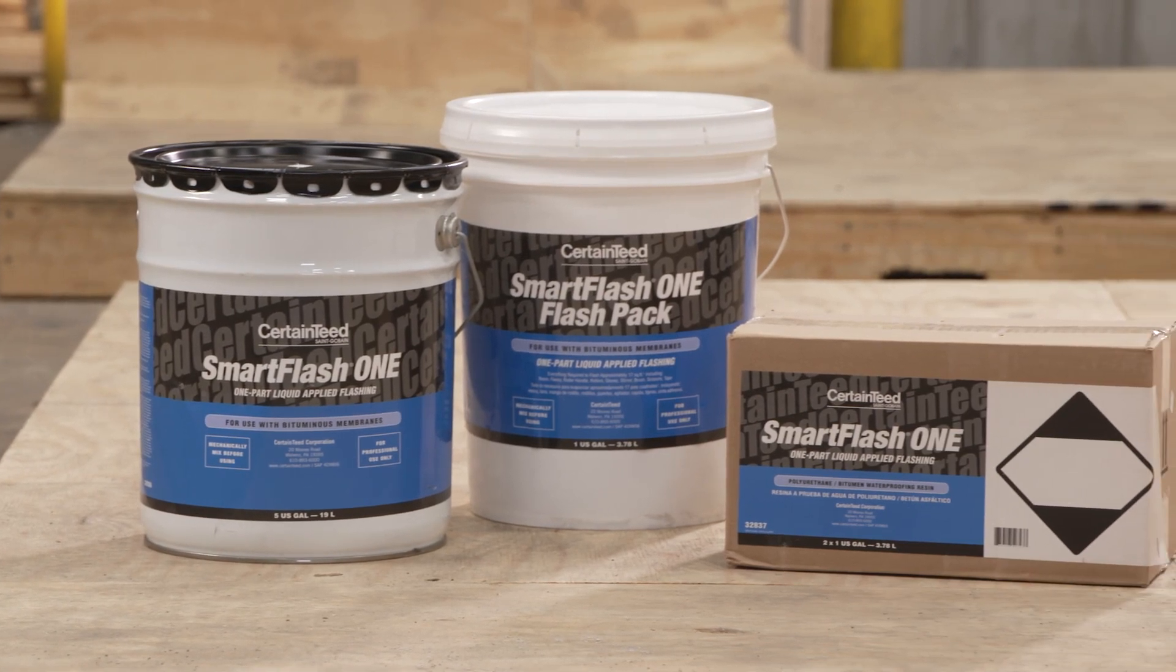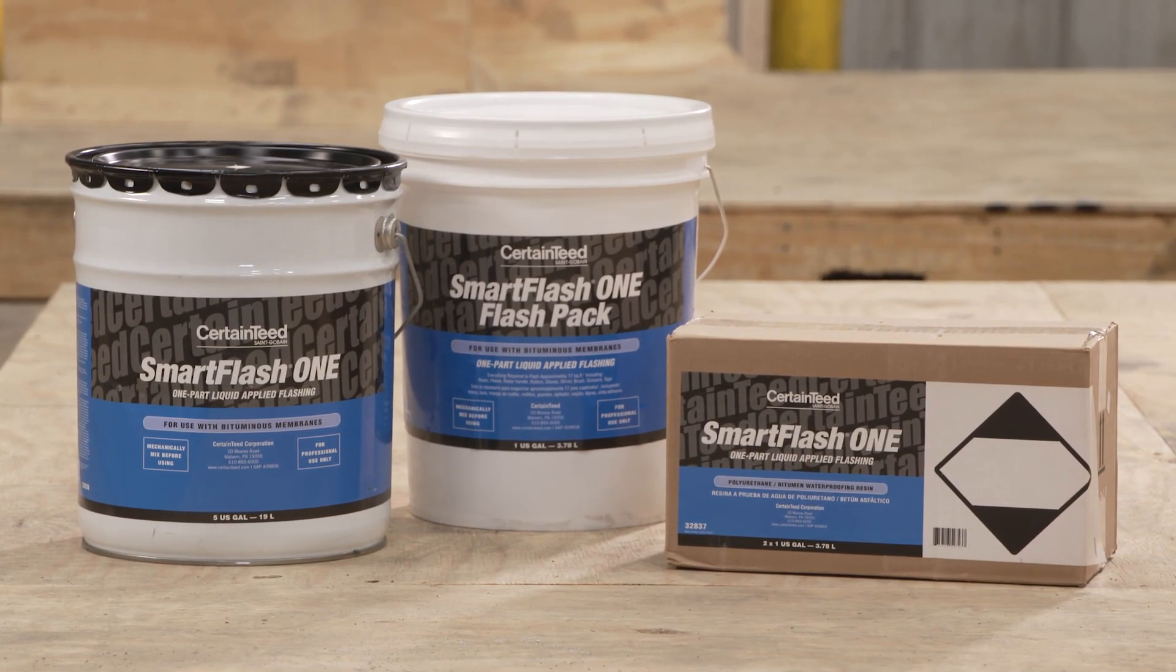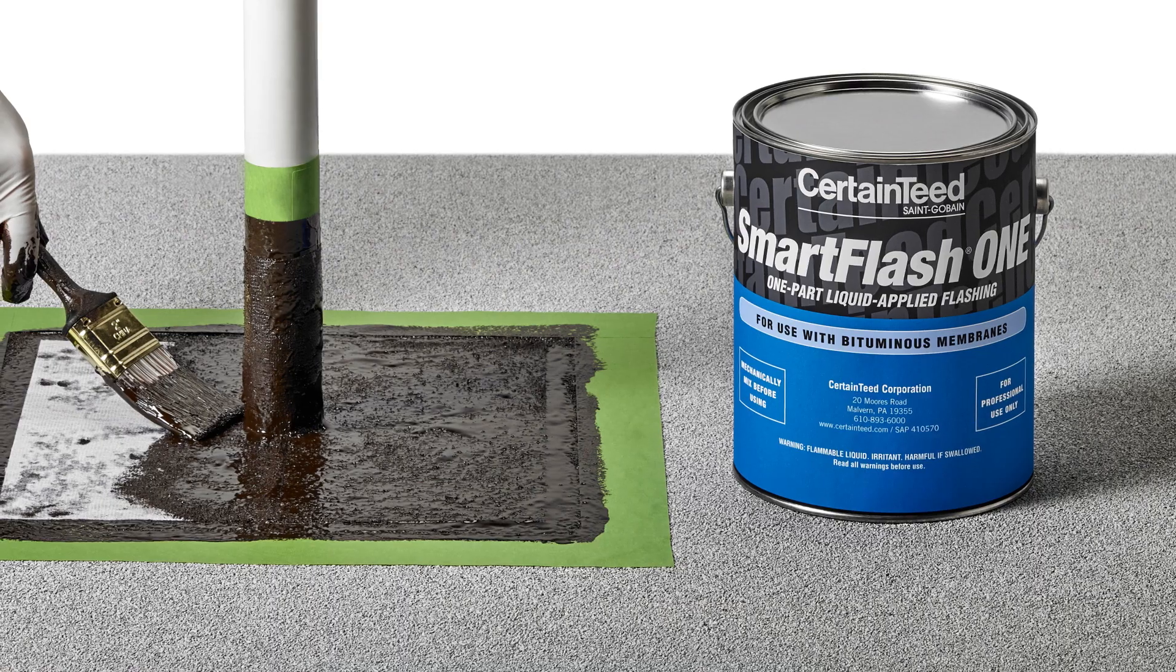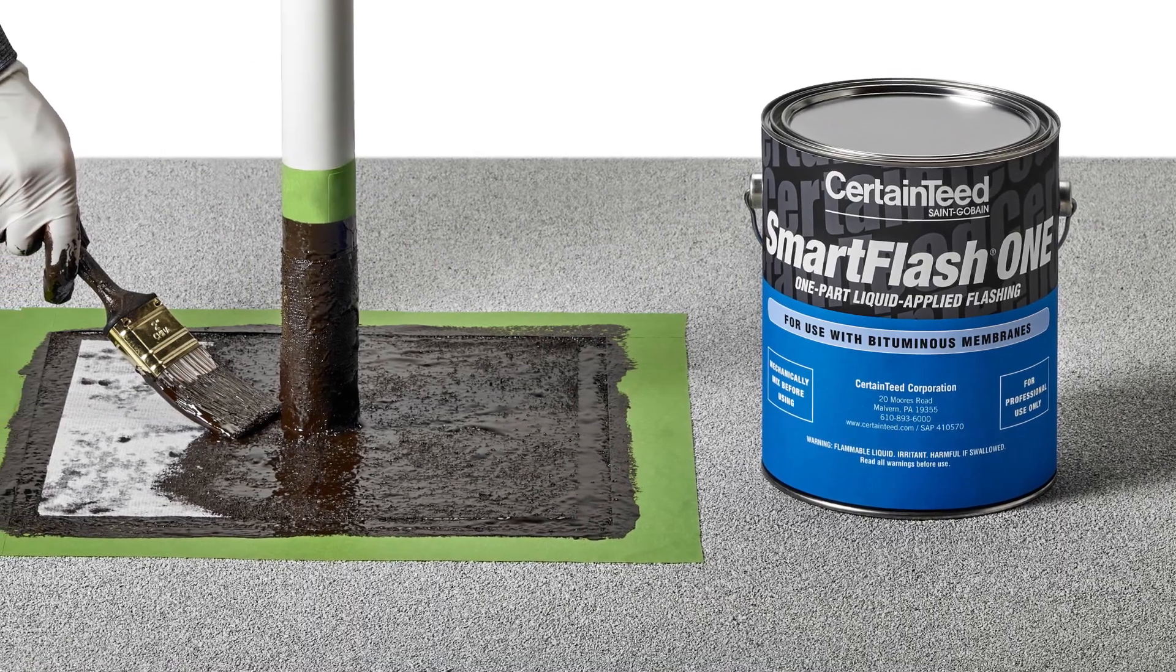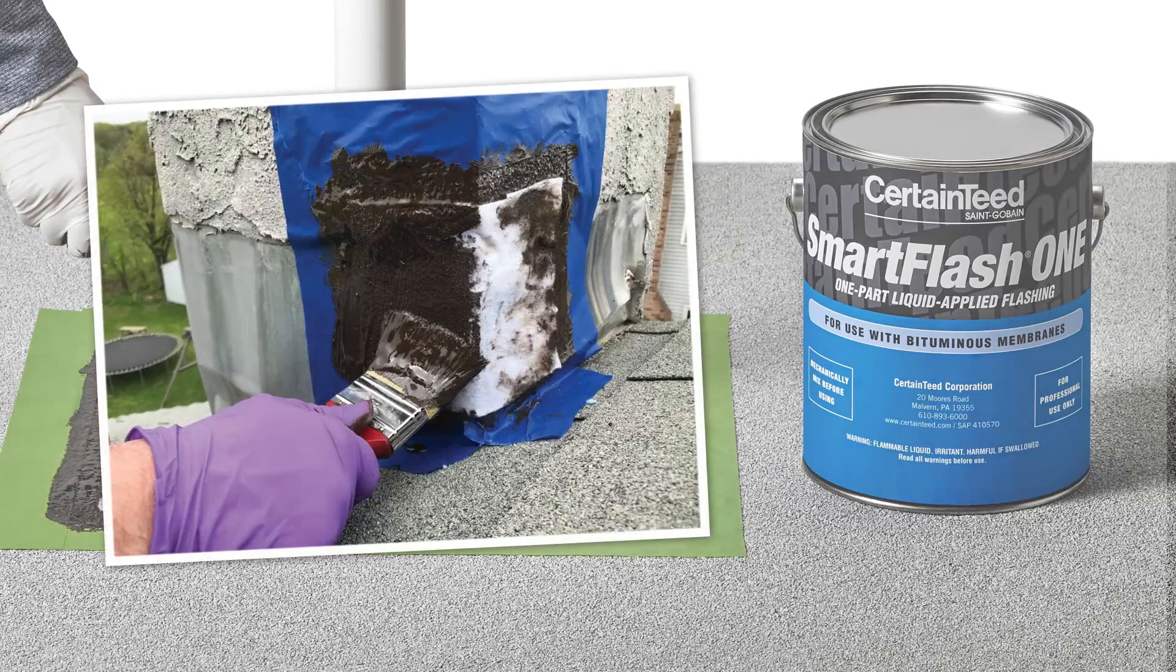If you work with asphaltic shingles or membranes, SmartFlash 1 is a must-have product. SmartFlash 1 is a bituminous urethane that can be utilized to flash new details or make repairs.